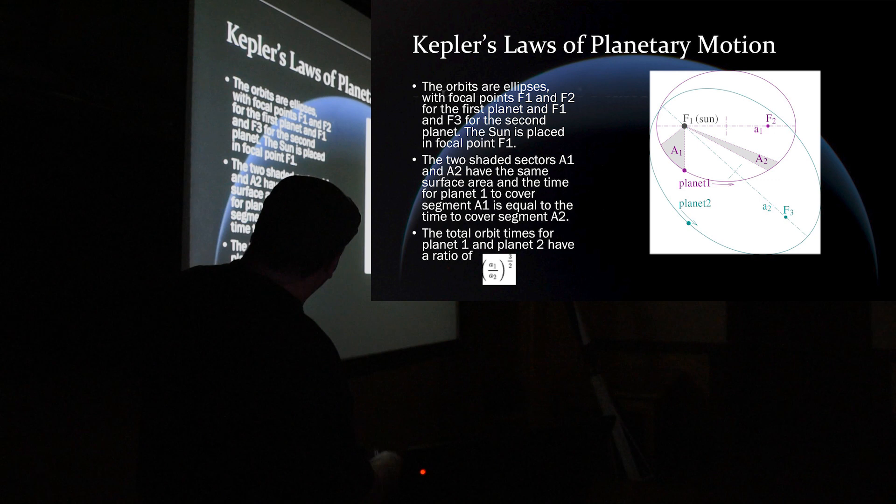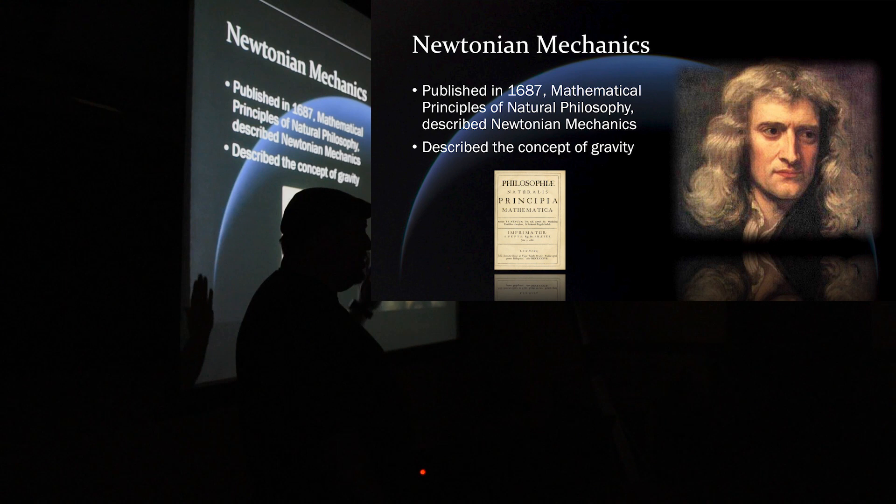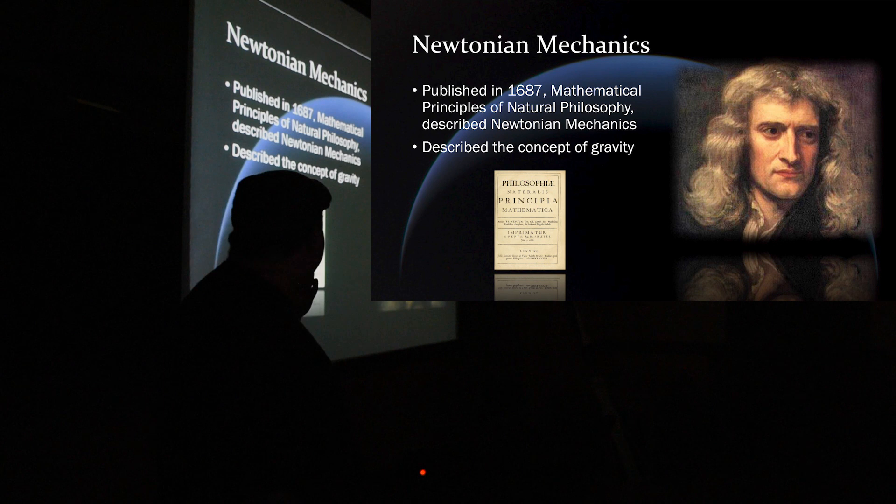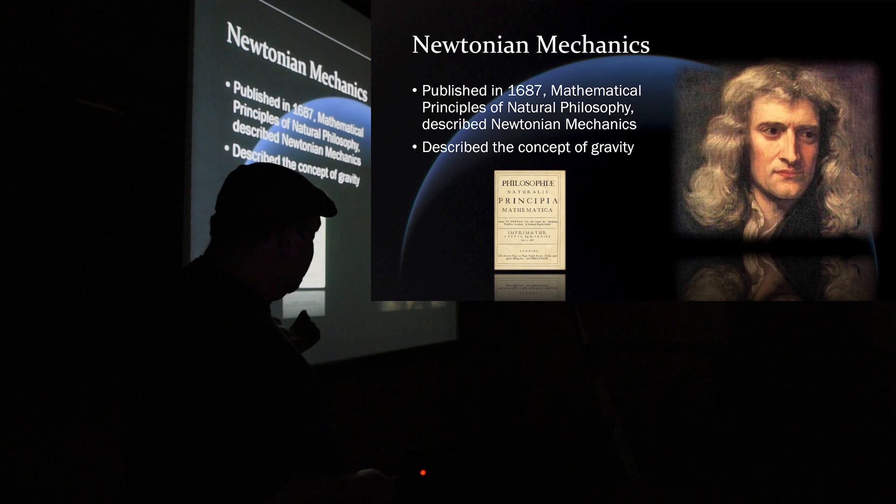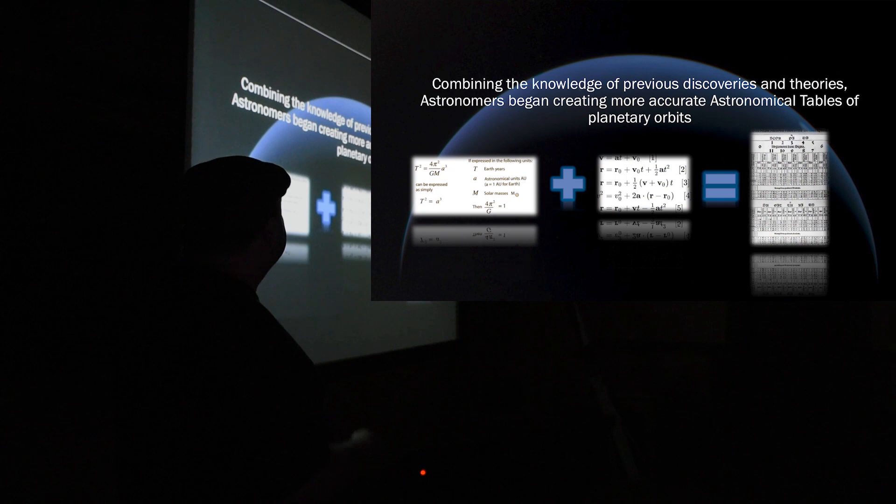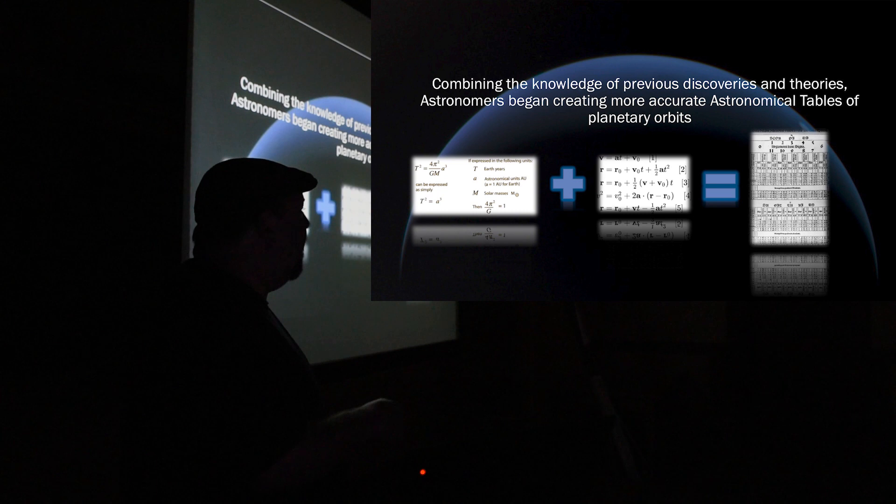Then comes the big guy. It's Isaac Newton. I'm not going to go into Newtonian mechanics. Just know that he introduced the concept of gravity. And his, the mathematical principles of natural philosophy, which is this here in Latin, essentially described Newtonian mechanics. He described the concept of gravity and the attraction of massive bodies of the universe. So, you combine Kepler's planetary laws of motion and Newton's Newtonian mechanics, they were coming up with better astronomical tables to predict where these planets are going to be in the future.